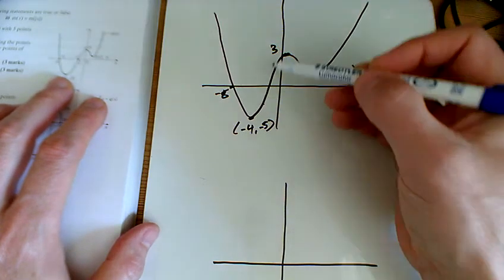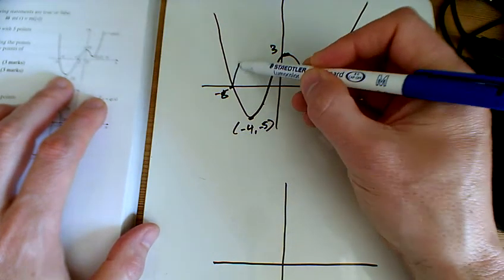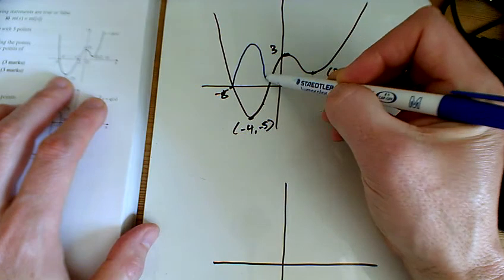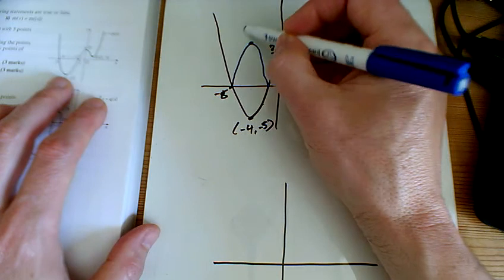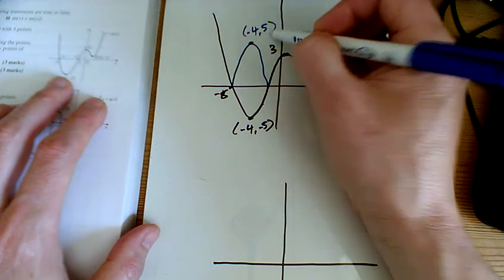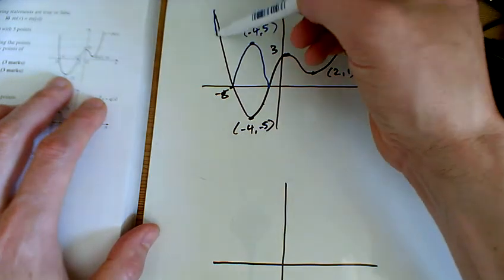So the modulus of this, this negative bit here, is going to flip up. So I'm just going to put that there. This point down here at minus 4, minus 5 is going to flip up here to be minus 4, 5. But the rest of it is all the same.